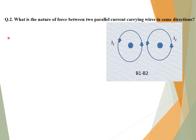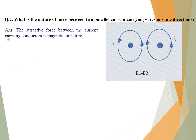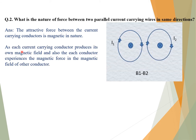Question number two: What is the nature of the force between two parallel current-carrying wires carrying current in the same direction? Answer: The attractive force between the current-carrying conductors is magnetic in nature, as each current-carrying conductor produces its own magnetic field and each conductor experiences a magnetic force in the magnetic field of the other conductor.